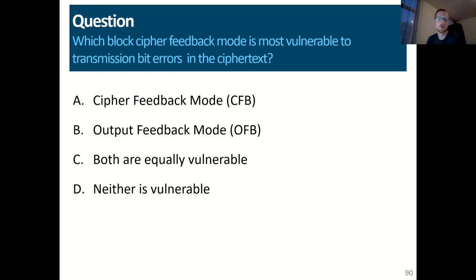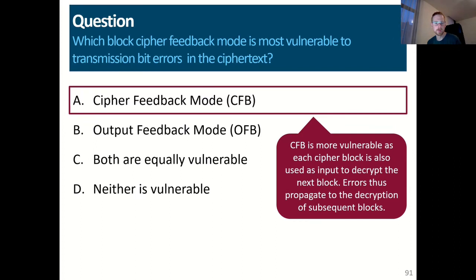I have a question related to these two modes — cipher feedback mode and output feedback mode. Which of the two is more vulnerable to transmission bit errors in the ciphertext? Assume you are using a wireless network such as a WiFi network, and there are some errors due to interference which cause some bits to be erroneous. Feel free to pause the video if you want to think about it. The answer is cipher feedback mode, which is more vulnerable, as each cipher block is also used as input to decrypt the next block. Errors therefore propagate to the decryption of all subsequent blocks.